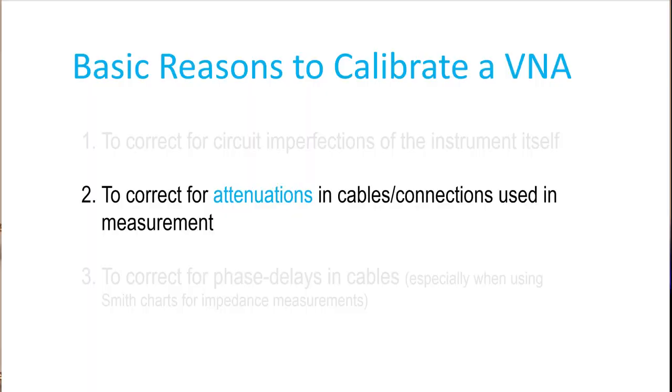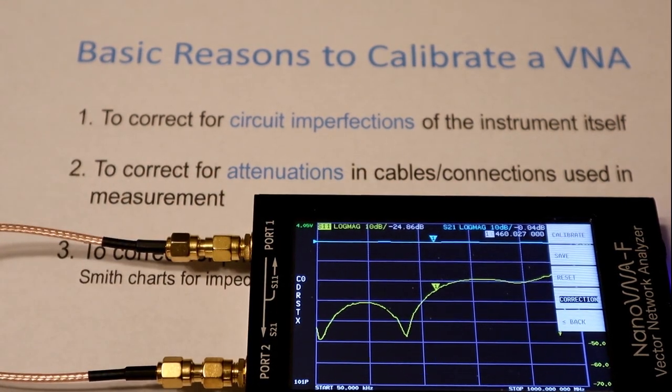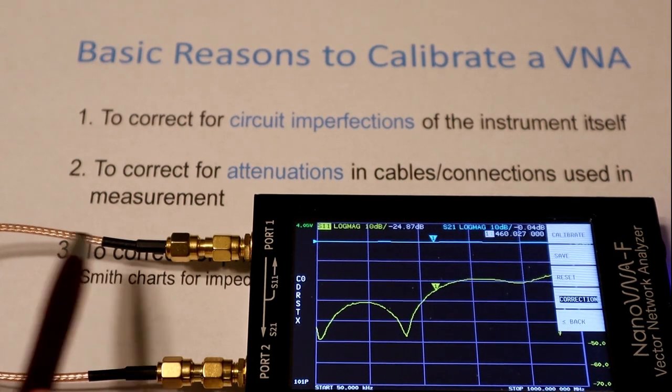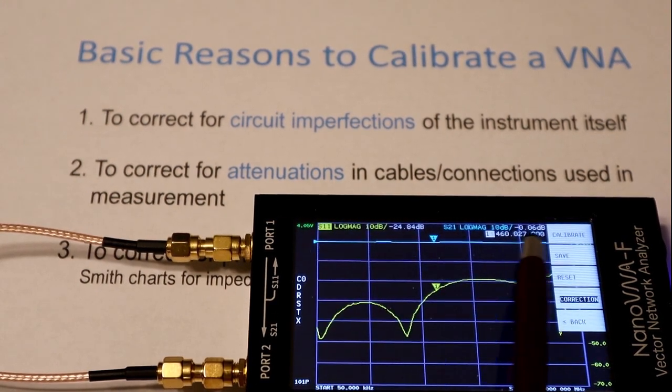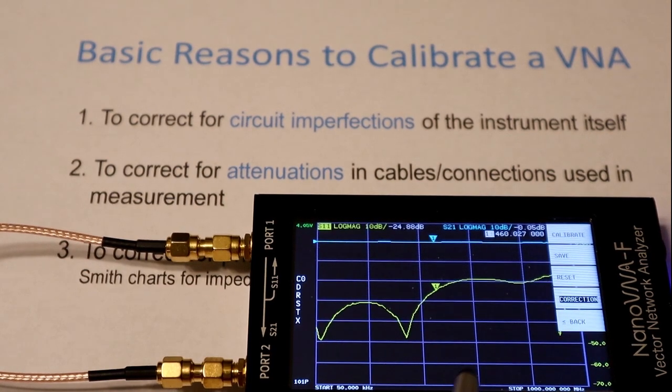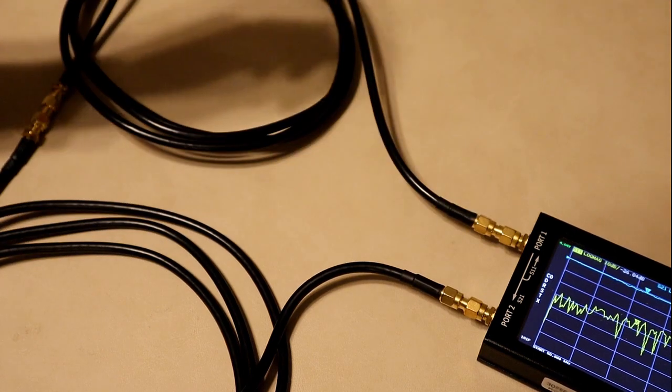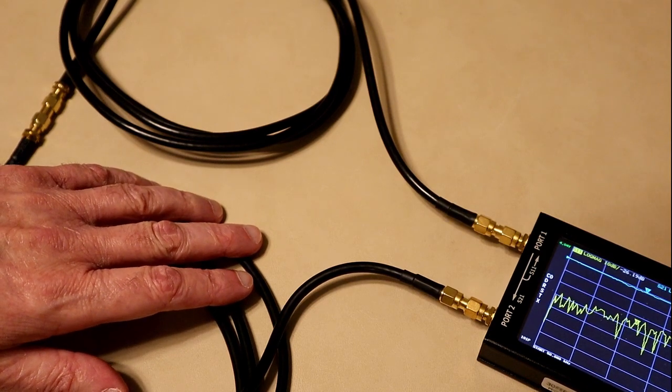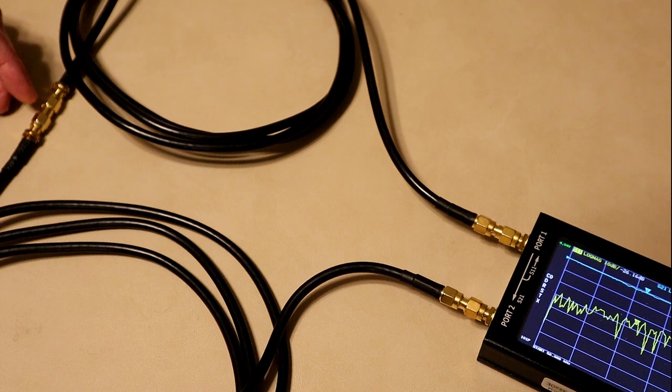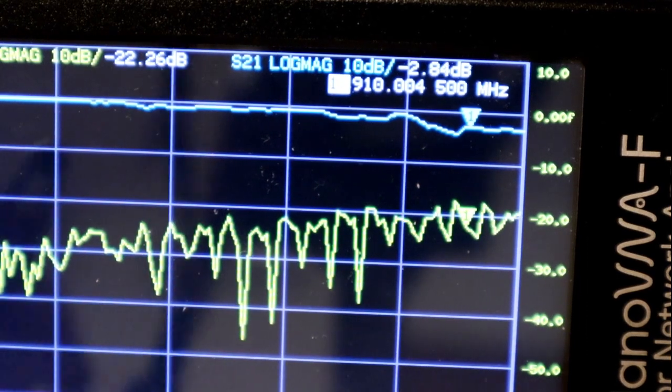To demonstrate when you might need to do CAL for number 2, to correct for attenuations in cables and connections used in the measurement, I have this setup with port 1 connected to port 2 using the cable I used during the calibration. And we have a nice blue line here at 0 dB across frequency from 50 kHz out to 1 GHz. Correction, I've turned back on. But suppose the device we want to measure is not such that we can put it right at the VNA.